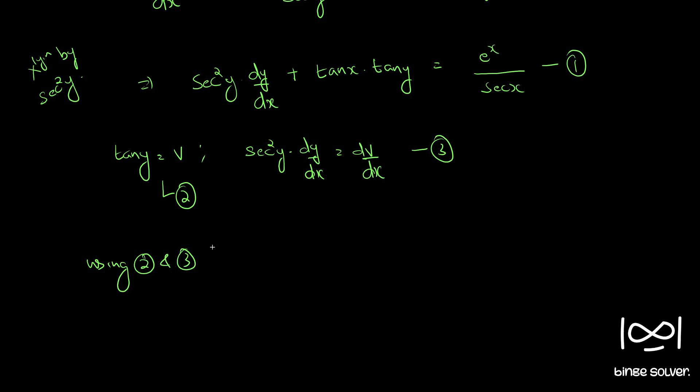So using 2 and 3 in 1 we have dv by dx plus tan y is v, so v into tan x equal to e raised to x by sec x.